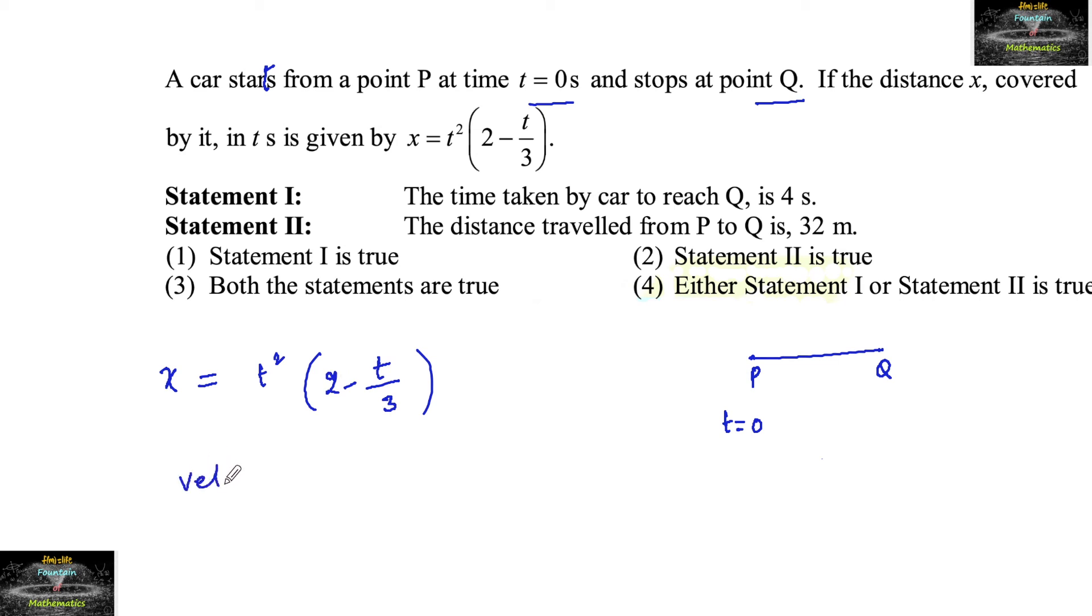Then its velocity is dx by dt which equals d by dt of 2t squared minus t cubed by 3. Differentiating with respect to t, we get 4t minus 3t squared upon 3, which equals 4t minus t squared.